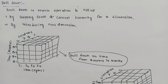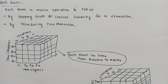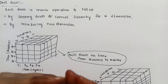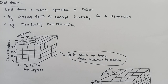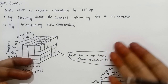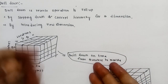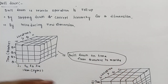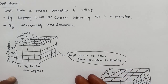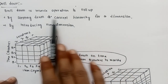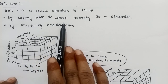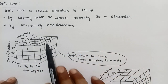Next, Drill Down operation. This drill down operation is the reverse operation of roll up. Roll up reduces to two or three dimensions; drill down increases the dimensions. Drill down is a reverse operation to roll up by stepping down the concept hierarchy for a dimension.